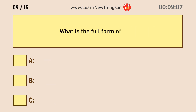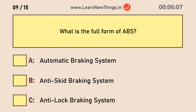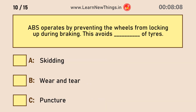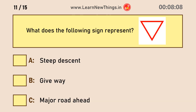What is the full form of ABS? Anti-lock braking system. ABS operates by preventing the wheels from locking up during braking, which avoids skidding of tires.